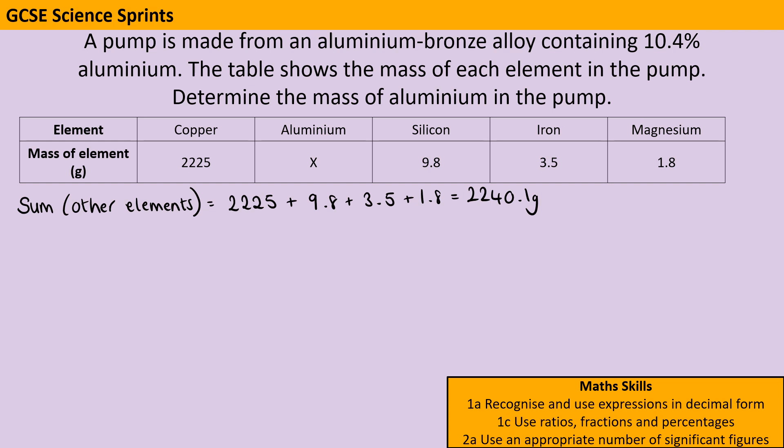If we're thinking about the whole of anything, that's 100%, and we know that 10.4% is aluminium, so we can do 100 take away 10.4 to be left with 89.6%.